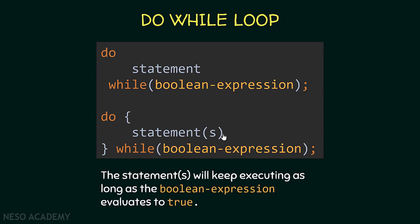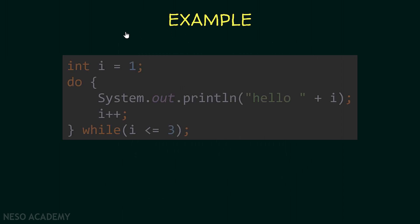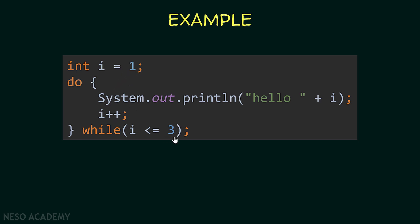The statements will be executed as long as the boolean expression evaluates to true. For example, I'm initializing a variable i as an integer equal to one, and then saying do this code while i is less than or equal to three. We are printing hello concatenated with i, and then incrementing i. Since i starts from one and ends at three, this loop is going to run three times.